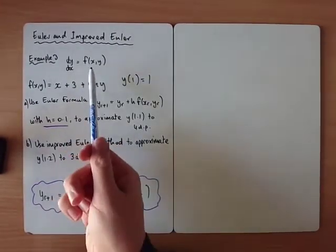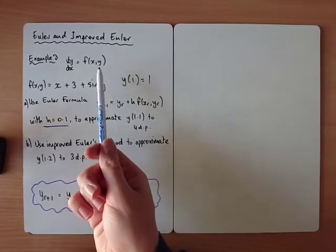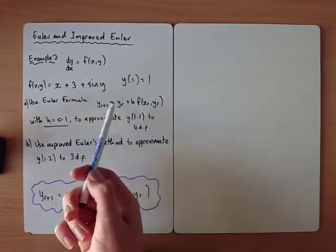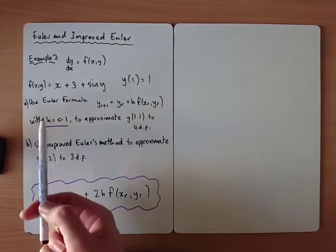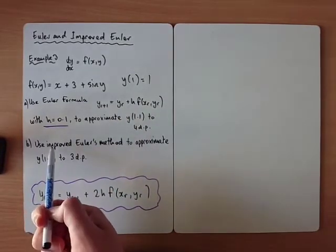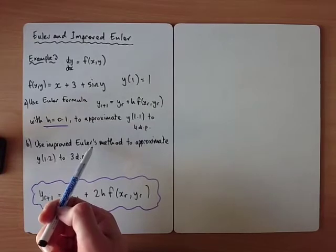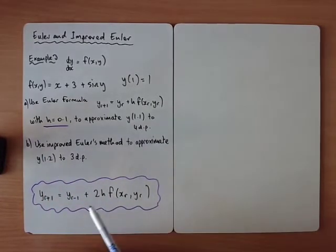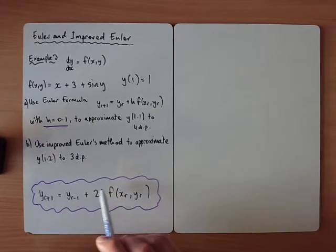Next example, we've got a function of x and y again. And the first part of the question, we want to use the Euler step-by-step technique. And the second part of the question says, use the improved Euler method. Now, this is the first time we've seen the improved Euler. You do get it in the formula booklet, and it looks like this.